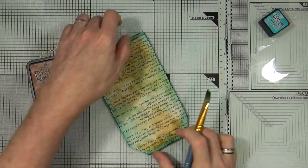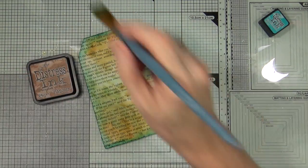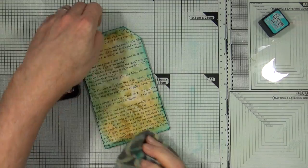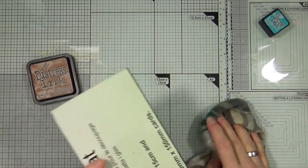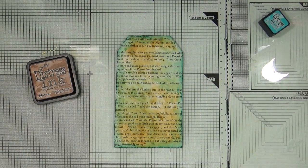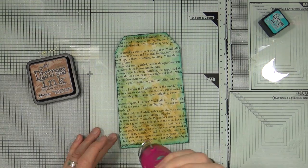Once again to make sure that everything's nice and dry before we move on to our next step, I'm just going to bring up that heat gun and just give it a nice drying off before moving on to decorating the back of the tag.